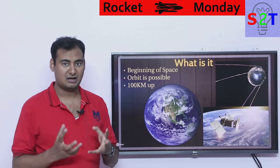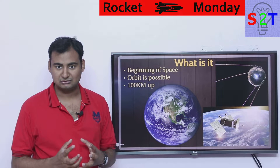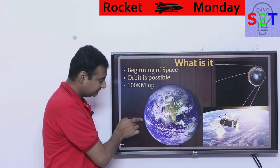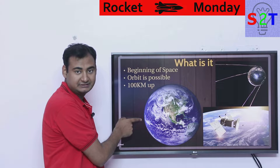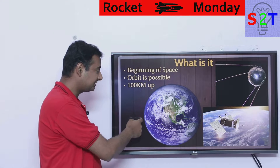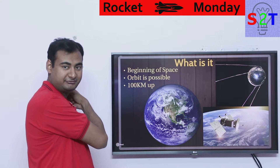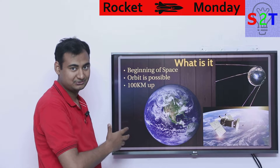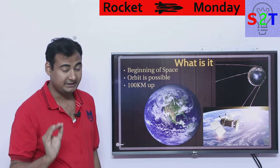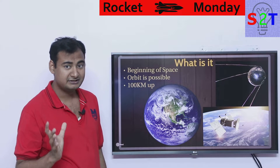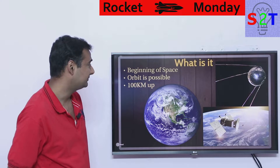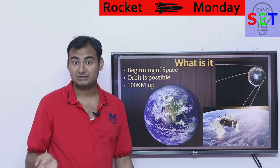Many people do not grasp the concept of how close low earth orbit is to Earth. Basically, if this is the Earth, low earth orbit is barely here — barely. Like geostationary won't even fit if I try to show it on scale. But low earth orbit is very close — very, very close. 100 km is not far apart. So that's what it is.